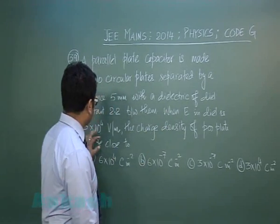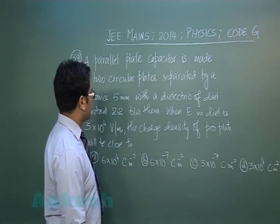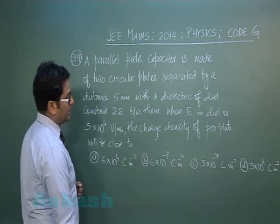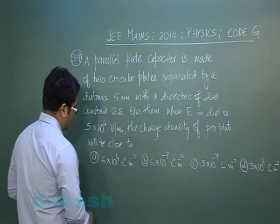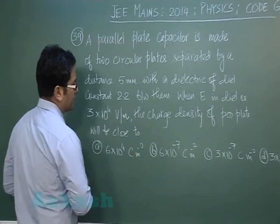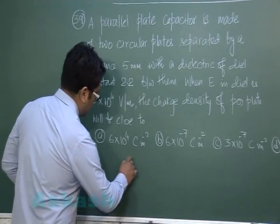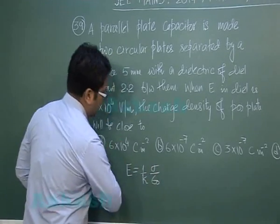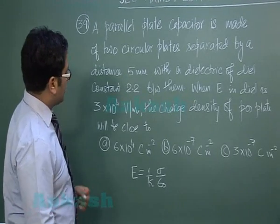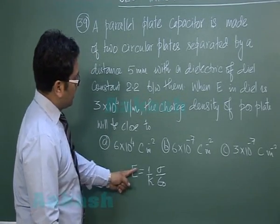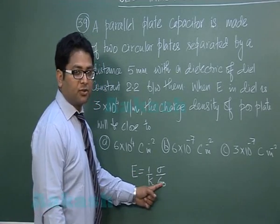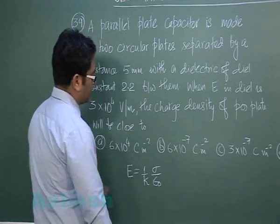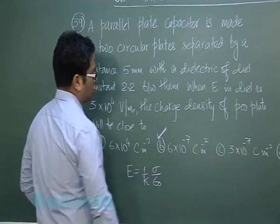When the electric field in the dielectric is given, we need to find the charge density of the positive plate. It's a parallel plate capacitor and we neglect fringing, so the electric field inside would be 1 by k times sigma by epsilon naught. The electric field is given, epsilon naught is 8.8 times 10^-12, and k is the dielectric constant. On calculation, the charge density comes very close to option B.